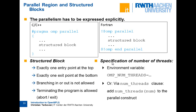OpenMP follows a pragma-based approach. As a programmer you insert directives in your code to express parallelism and guide execution of the parallel program. The compiler translates your code into a program that runs in parallel with help from an OpenMP runtime library. Pragmas are instructions for the compiler in C and C++; in Fortran this is done with comments. The fundamental building block in OpenMP for parallelism is a parallel region.